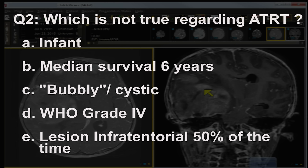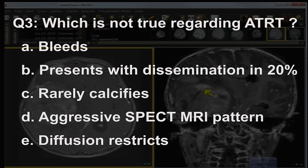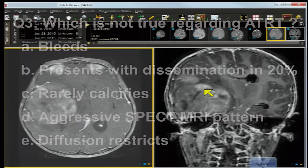Question three: which is NOT true regarding ATRT? A) bleeds, B) presents with dissemination in 20%, C) rarely calcifies, D) aggressive spectroscopy MRI pattern, E) diffusion restricts. Let's go back to the imaging.